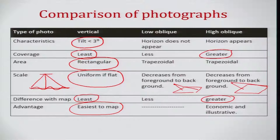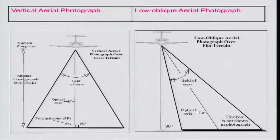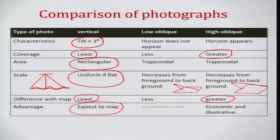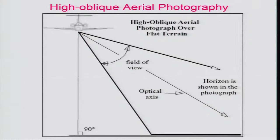For vertical photographs, the tilt can be less than 3 degrees, which is permissible. In low oblique, the horizon will not appear, whereas in high oblique it will be visible. I will show a couple of aerial photographs collected from an aircraft to clear your understanding of high oblique, low oblique, and vertical.